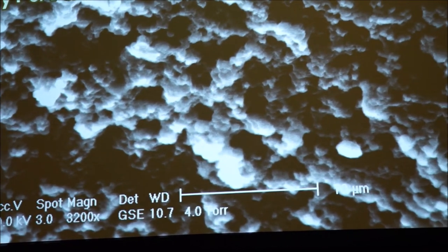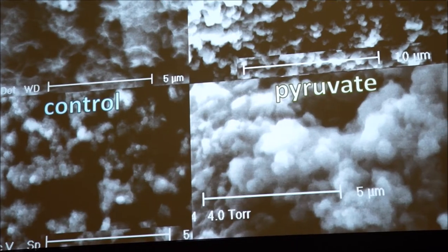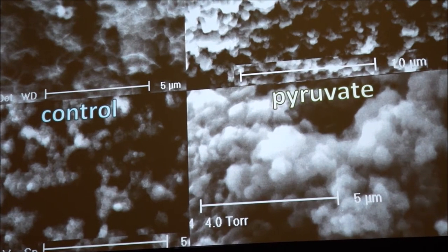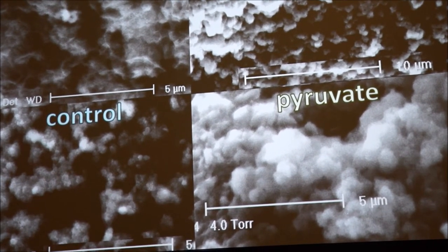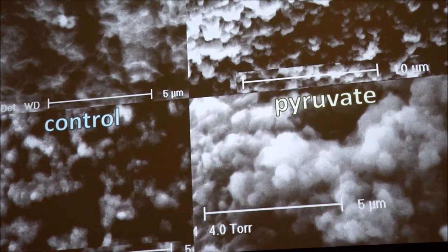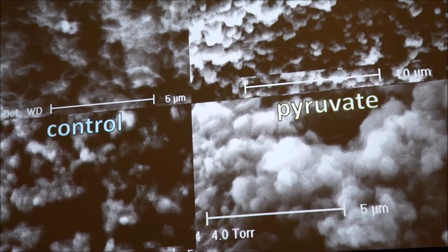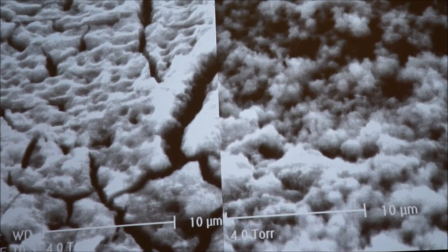Under ESEM, in the pyruvate chimney, we get lots of rounded morphologies and no hint of the crystalline morphology that we saw in our control chimneys. Here are some slides showing that in our control chimney we see both rounded morphologies and crystalline ones. But in the pyruvate, as far as I checked, I could not find anything crystalline.